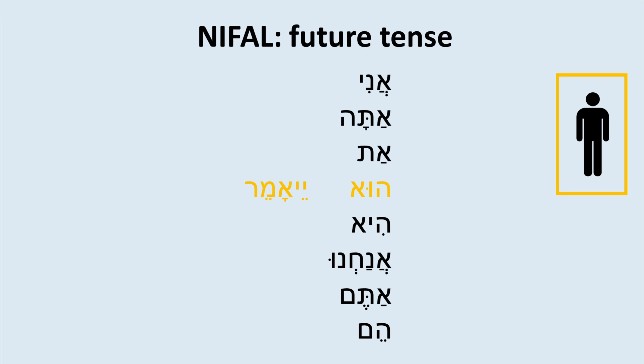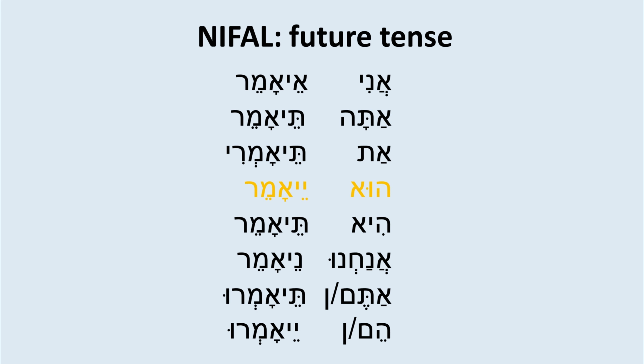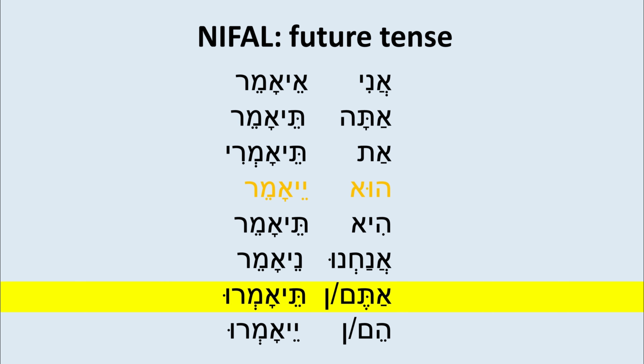We put this in our system: Ani e-amer, Ata te-amer, At te-amri, Hu ye-amer, Hi te-amer, Anachnu ne-amer, Atem te-amru, Hen/Hem ye-amru. As you can see, everybody gets a yud, then the prefix in front. Some persons also need a suffix, like At te-amri with the yud at the end, or the plural forms with a vav at the end.